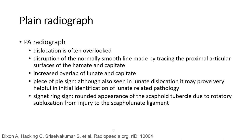On PA radiograph, the dislocation is often overlooked. There is disruption of the normal smooth arc made by the proximal articular surface of the proximal carpal row and capitate. On PA radiograph, findings include increased overlap at the luno-capitate joint, the piece of pie sign, and the signet ring sign.